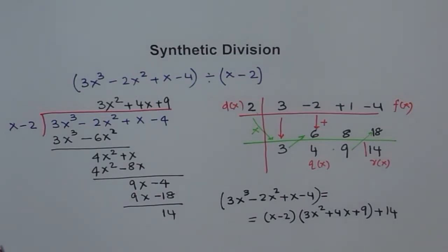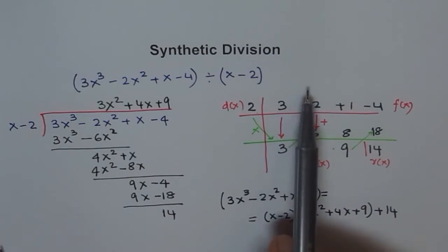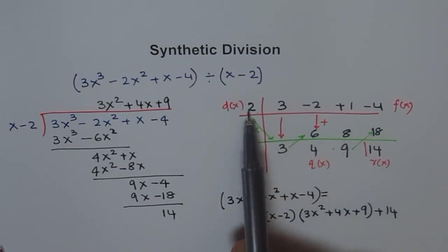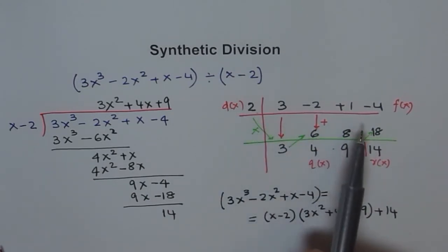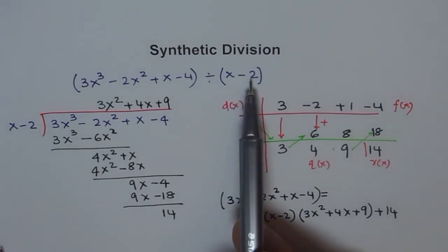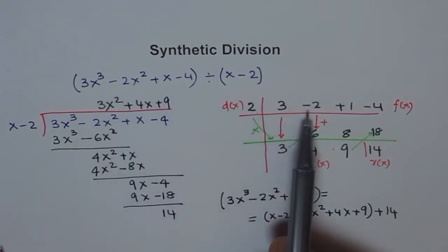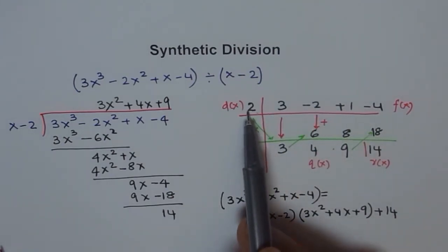This is a much simpler process — it takes less space and is much faster. You don't have to work with the x terms, but you must follow a few rules: arrange terms in decreasing degree order, the quotient degree is one lower than the dividend, and the remainder is one degree lower than the divisor. When dividing by x minus 2, put the number 2 in the box — the value that makes the divisor zero.